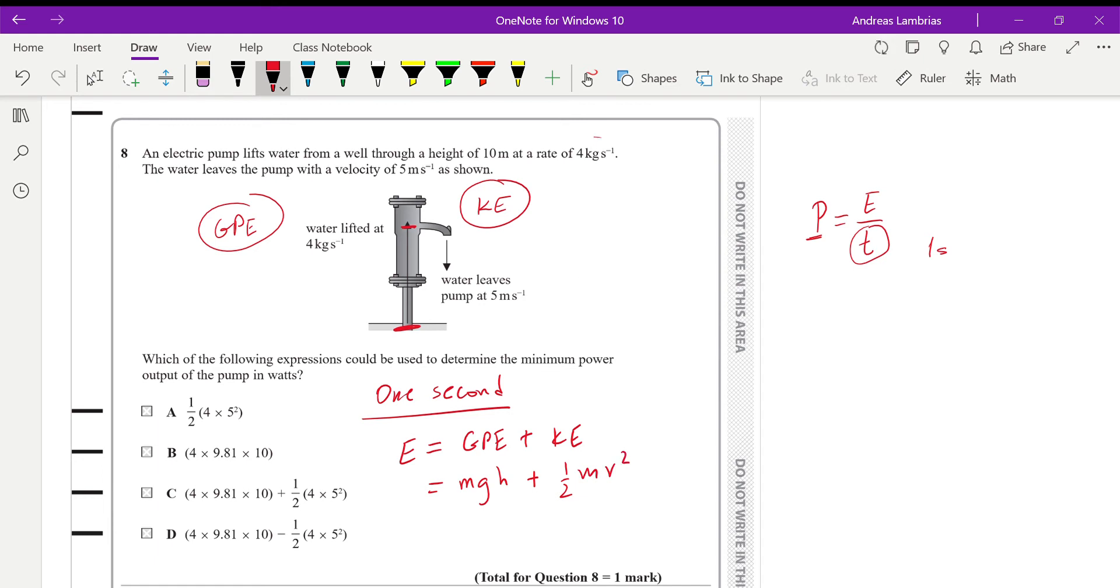Now in one second, the mass of the water is four kilograms. It is giving us the rate that the water is being lifted. But this rate is the mass per second. So if we consider this to be one second, that means in every second there's a mass of four kilograms. Therefore, if I substitute the numbers, 4 times 9.81 which is g, times 10 which is the height. So this is gravitational potential energy. And on that, I'm going to add the kinetic energy of the water, which is half times 4 times 5 squared. So then the right answer would be C. And again, this is supposed to be divided by one as time. So we found the energy and we divide the energy per time.